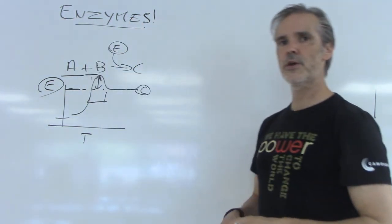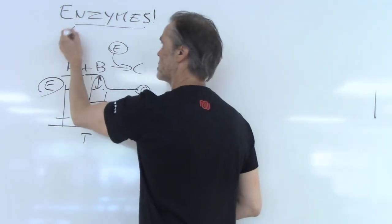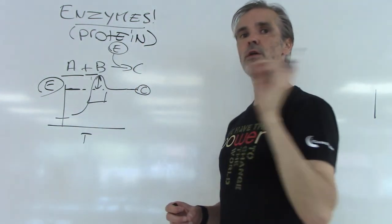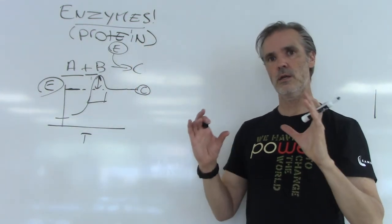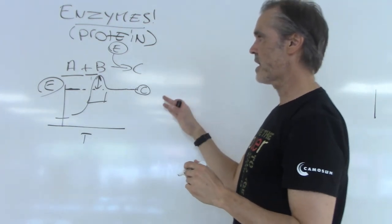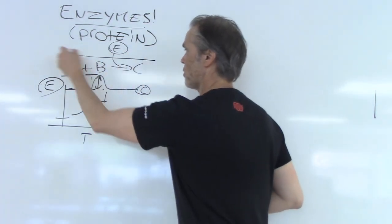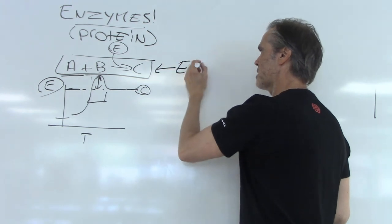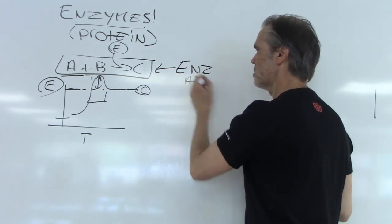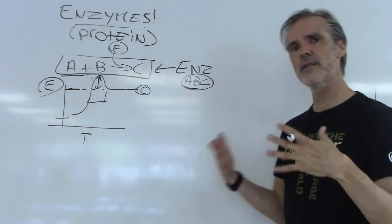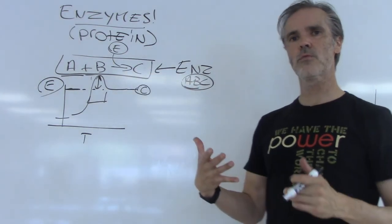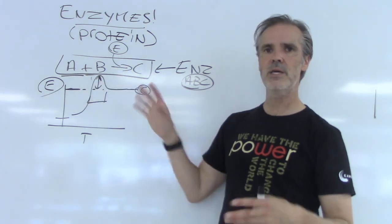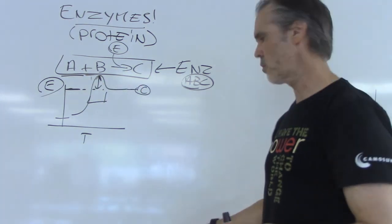Cells have tools called enzymes. Remember that enzymes are proteins — a protein with a very specific function. Let's say the enzyme needed for this reaction is enzyme ABC. My goal is to show how enzyme ABC is going to interact with A and B in order to form C.